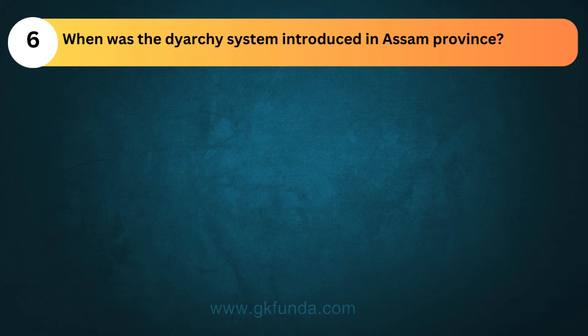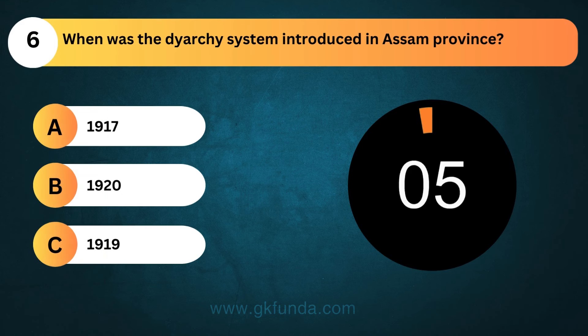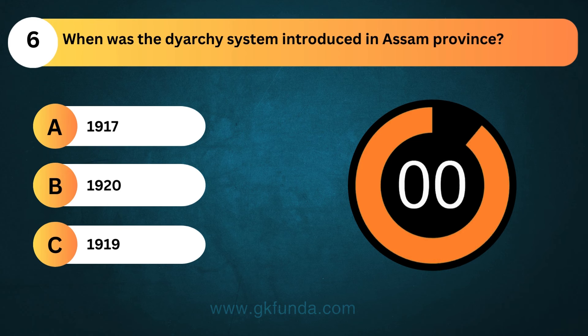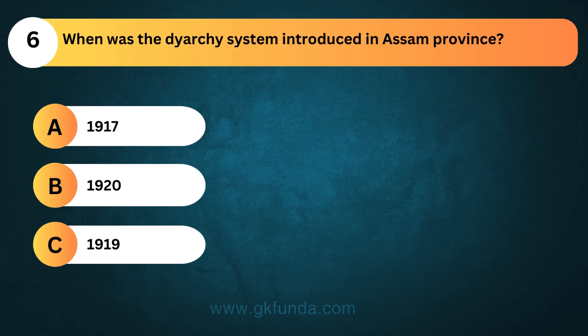When was the diarchy system introduced in Assam province? The answer is option C, 1919. The diarchy system of double government was introduced by the Government of India Act, 1919, for the provinces of British India.